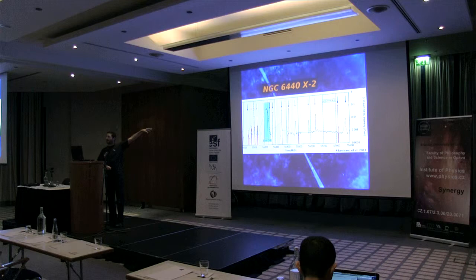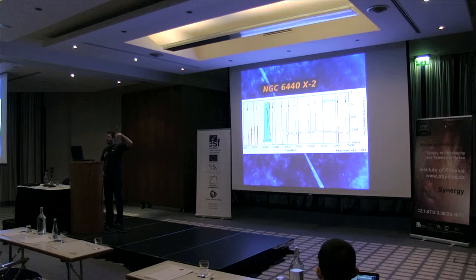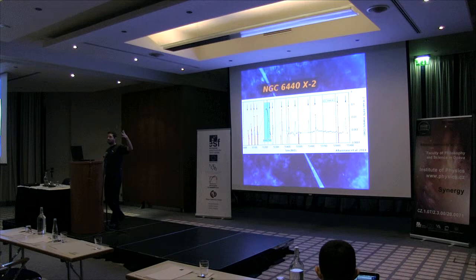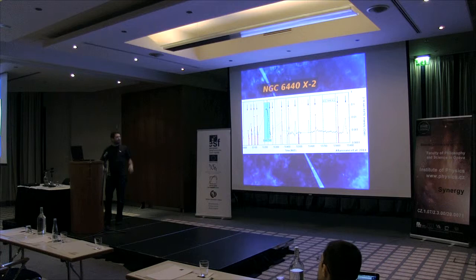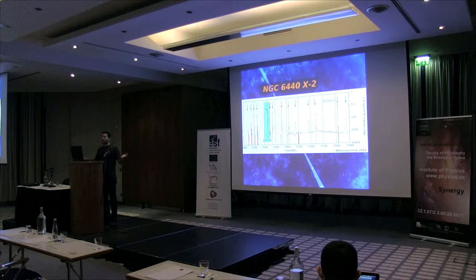On the extreme of short outbursts, we have a source called NGC 6440 X2, located in the globular cluster 6440. In this plot, arrows mark all the outbursts we were able to detect — outbursts that last only two to four days maximum, and they are not very bright. We confirmed it was the same source because we found pulsations, and this gave us the idea that globular clusters might harbor many such systems having mini-outbursts that old sky monitors are not sensitive enough to detect.